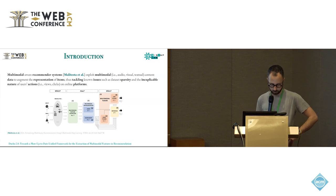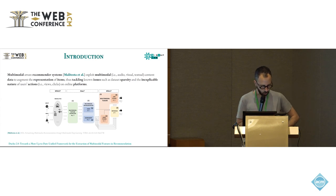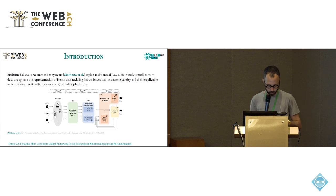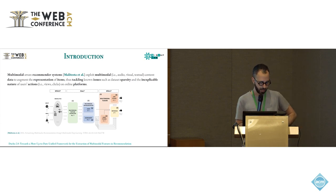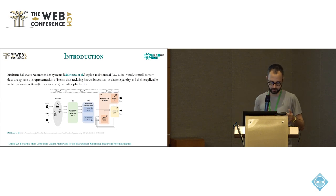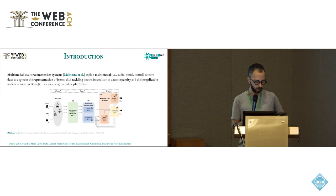Multimodal recommender systems utilize multiple data sources to enhance the representation of items, addressing common issues like data sparsity or the often inexplicable nature of user actions such as clicks or views. We want to integrate this multimodal data to significantly improve accuracy and relevance. These systems utilize visual data such as product images, user reviews, and audio features from items. By combining all these features, we create a richer and more comprehensive perspective to understand both items and user preferences, leading to more personalized and effective recommendations.